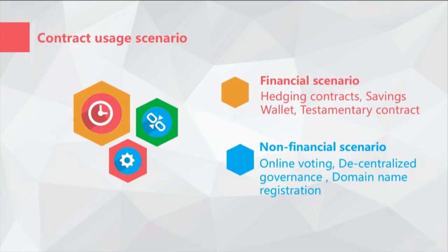With the EVM, smart contracts can be used in many things. One of them is financial applications including hedging contracts, savings wallets, and other things. Non-financial uses include online voting, decentralized management, and DNS regulations.